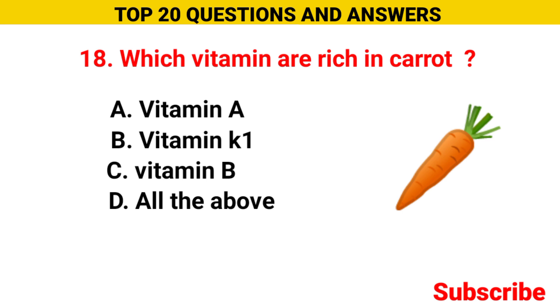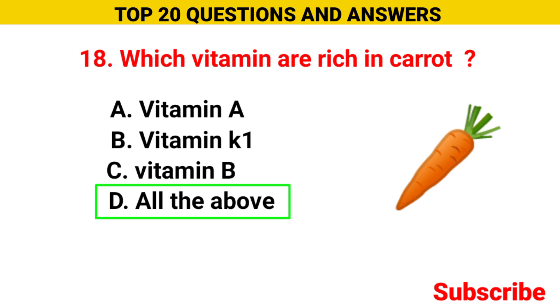Which vitamins are rich in carrot? Option A vitamin A, option B vitamin K1, option C vitamin B, option D all the above. The correct option is option D, all the above.